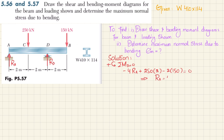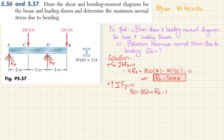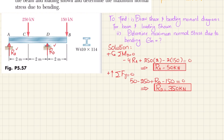Solving that equation gives Ra equals 50 kilonewtons. Now find Rd using the second equilibrium condition: sum of all forces along the y-direction equals zero, taking upward as positive. So Ra minus 250 plus Rd minus 150 equals zero, which gives Rd equals 350 kilonewtons. Now we have both Ra and Rd, so we can find the shear forces.